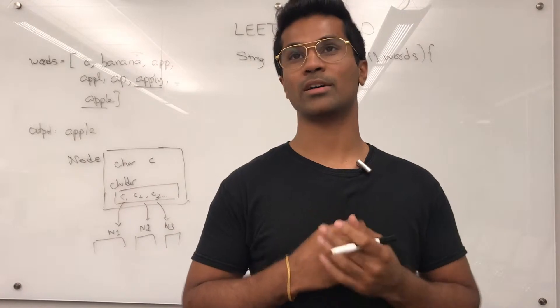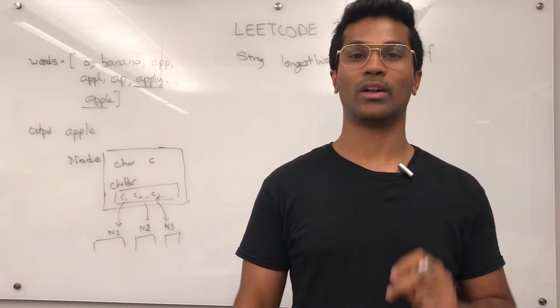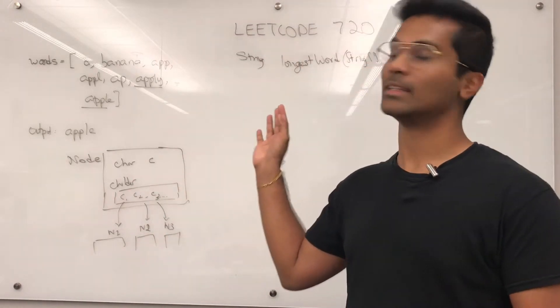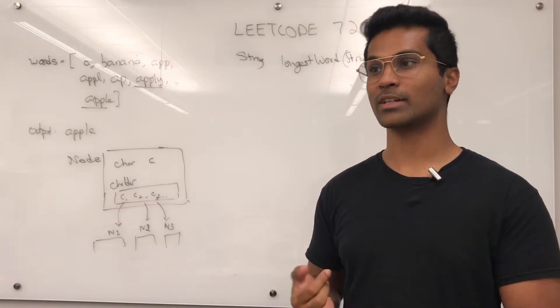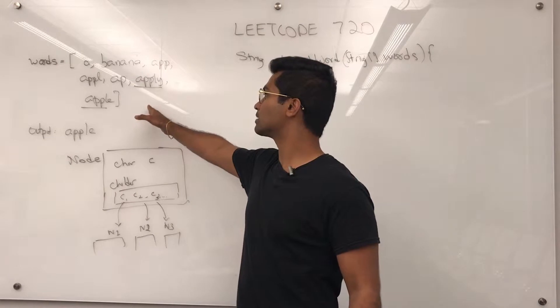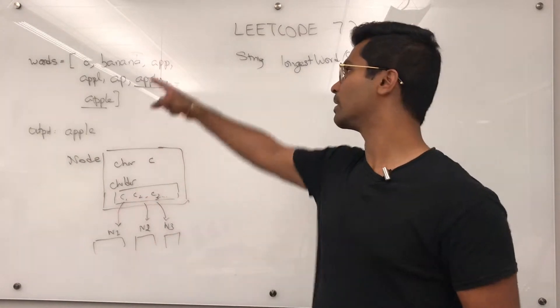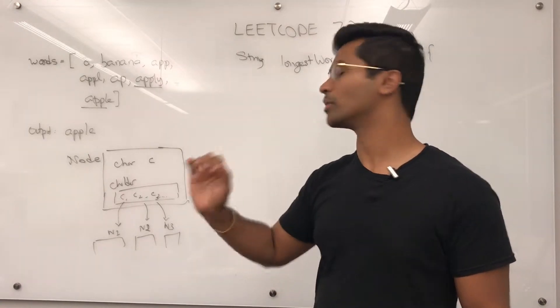When I first solved this problem, I solved it using sets, but I want to learn how to be better at using tries. So I'm going to present the LeetCode solution using a trie and a DFS. The input is going to be a list of strings and the output is going to be the longest word we can make with those strings, which is lexicographically the smallest.